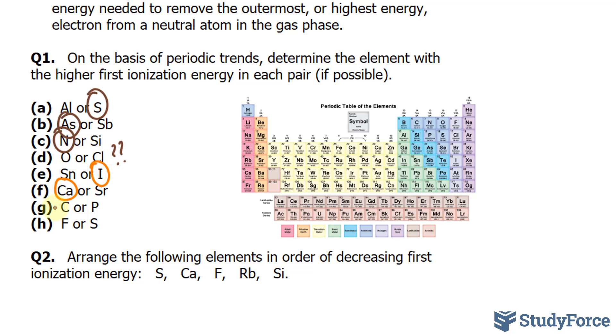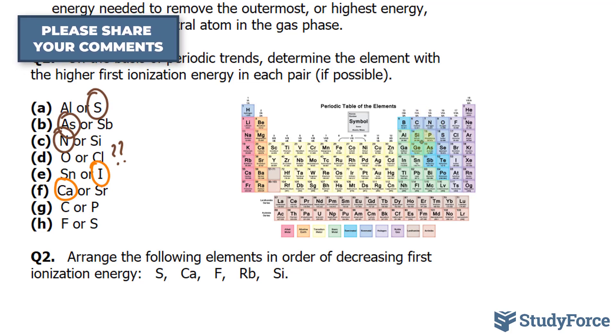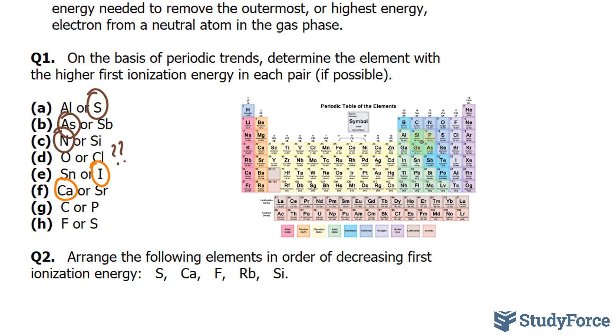Comparing carbon and phosphorus, carbon is here and phosphorus is here. Notice that phosphorus is to the right of carbon, but it's one column down. Because of this ambiguity, we can't really tell based on periodic trends alone which one has the higher first ionization energy. So I'll put a question mark here.